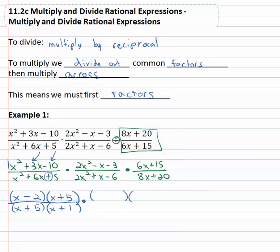The second fraction has no common factor, so we start looking for binomials. To get 2x squared it has to be two x times x. Negative three means they have different signs; three is three times one. Let's see if that works to give us negative one in the middle. Two x on the outside, three x on the inside — we can get negative one in the middle if it's negative three x plus two x.